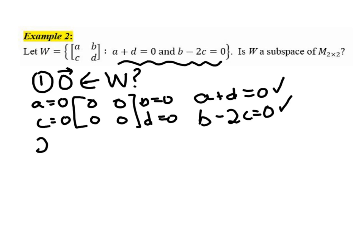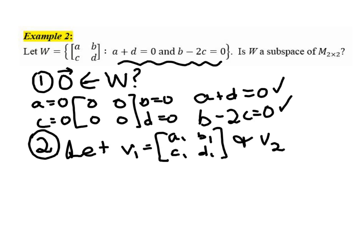Now to check the next two conditions, the closure under addition and scalar multiplication, we'll want to set up just some general vectors that belong in W. So let's let V1 equal this matrix A1, B1, C1, D1, and let's let V2 be this matrix A2, B2, C2, D2, where these guys belong in W. So A1 plus D1 equals 0.